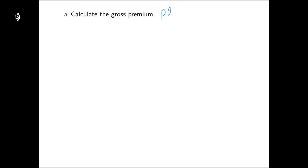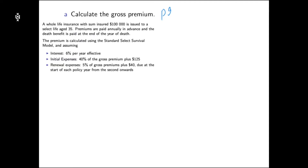In part A, we are going to calculate the gross premium, which we denote as PG. In order to calculate PG, we set the gross future loss at time zero to be zero. The expected present value of the premium is PG times the expected present value of the annuity due. For the benefit part, the expected present value is 100,000 times the expected present value of the whole life insurance.